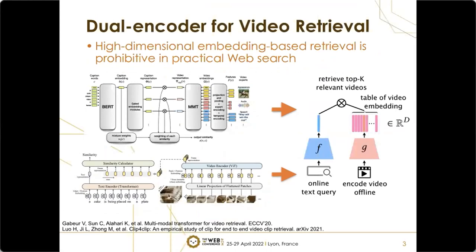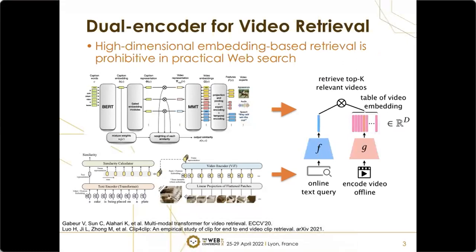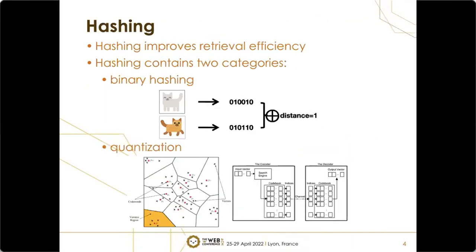Prior arts delve into dual-encoder architectures that produce separate text and video embeddings for dense retrieval. Despite the promising performance, these methods adopt brute-force search with high-dimensional embeddings. They are prohibitive in practical web search due to efficiency concerns. Hashing methods map data to the hamming space such that distance can be measured with fast bitwise operations.